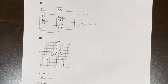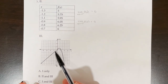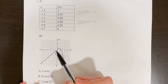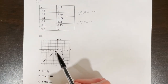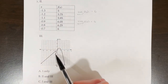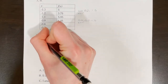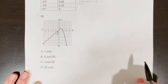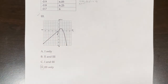The last representation is a graph. Looking for the limit as x approaches negative 1: from the left, y approaches negative 1; from the right, y approaches negative 3. The left-sided and right-sided limits don't match, so the limit at negative 1 does not exist. This is the only one that works, so the answer is 3 only.